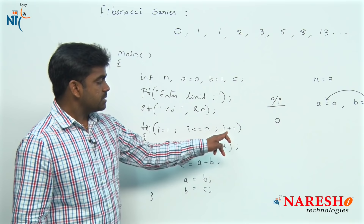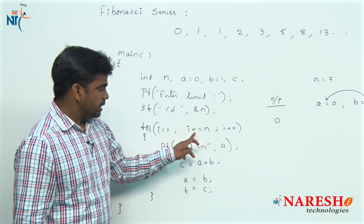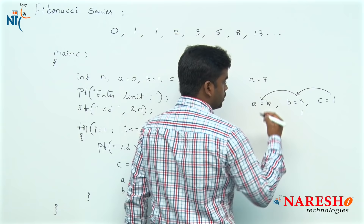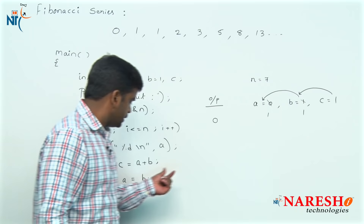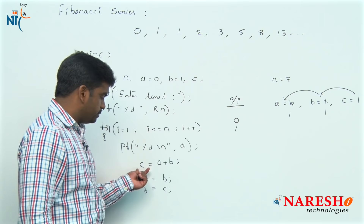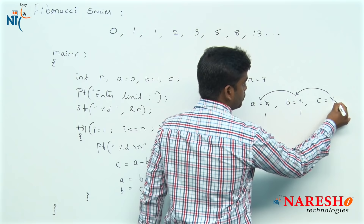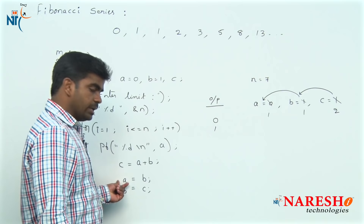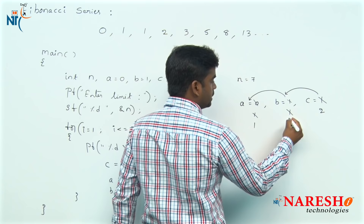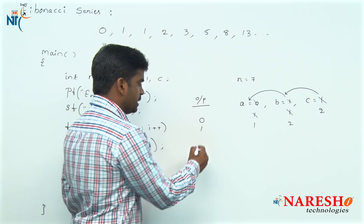This is the process to print the Fibonacci series. Next, i becomes 1, and since 1 is less than or equal to 7, the condition is true and it will print the a value. Now, since b was placed into a, a is 1. In the second iteration, it will print 1. Then a plus b is 1 plus 1, stored into c. Then b is stored into a and c into b, giving a equals 1 and b equals 2.